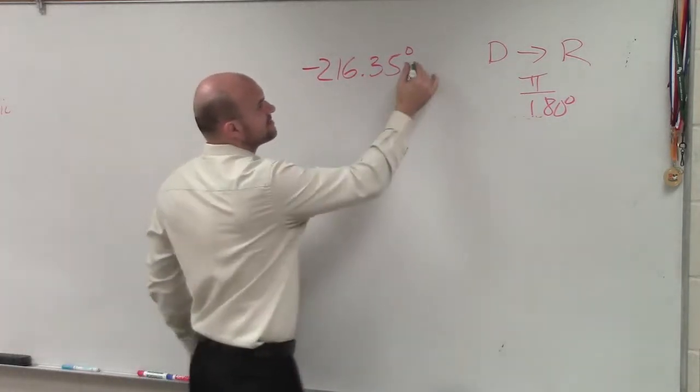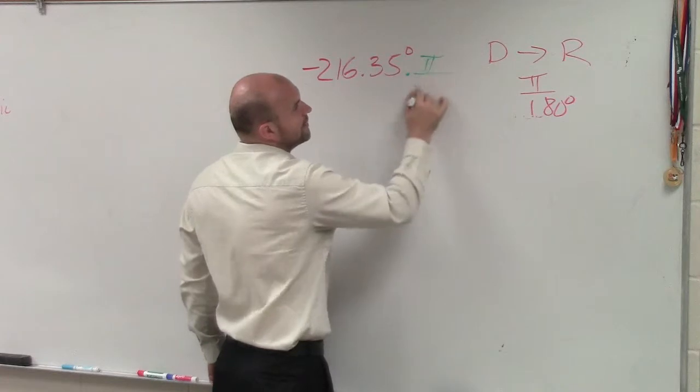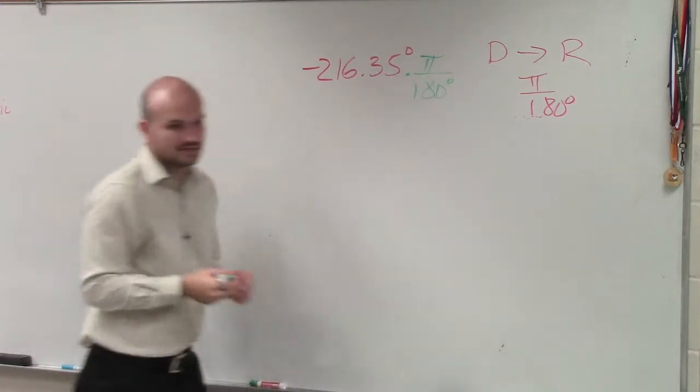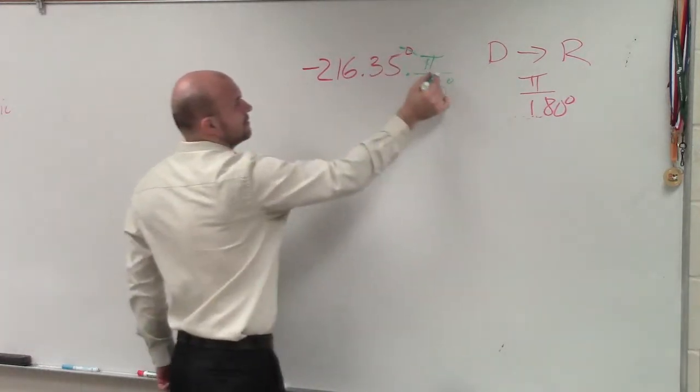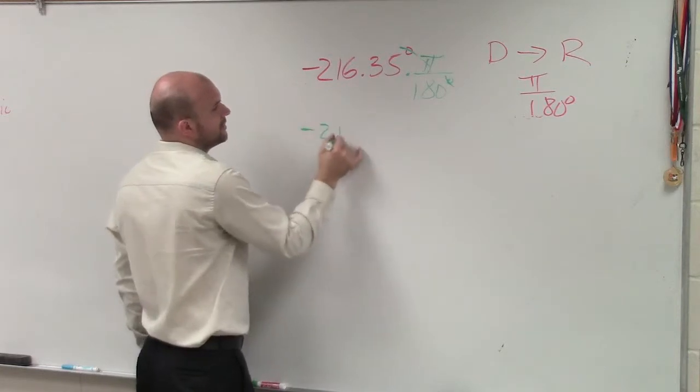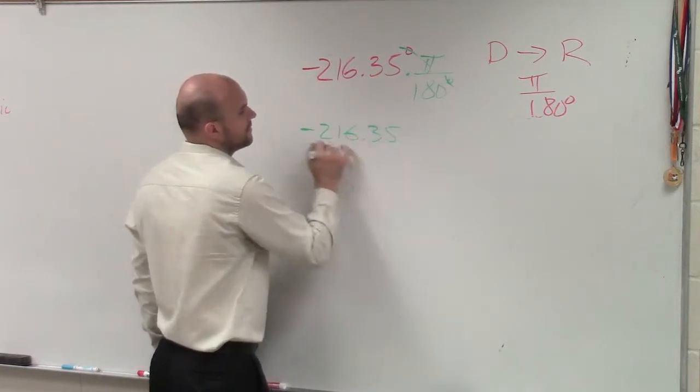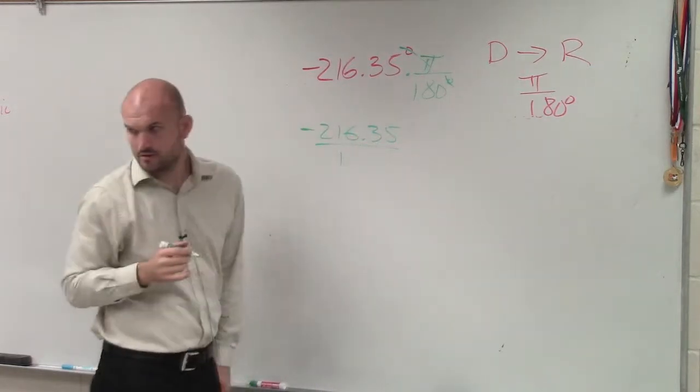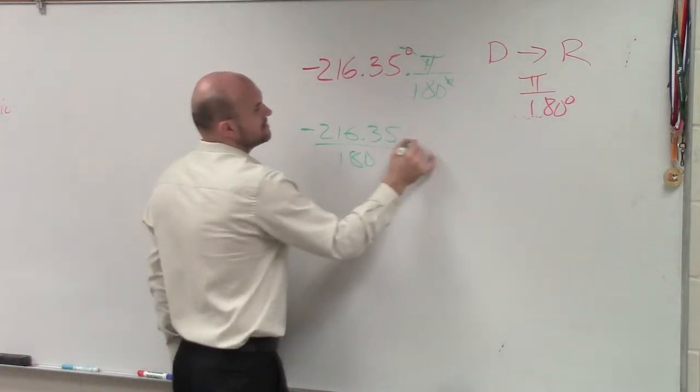So what I'll do is I'll still multiply this by pi over 180 degrees. Again, symbols left out, so we're left with 216.35. Was it negative? Negative over 180 times pi.